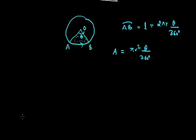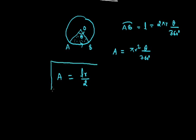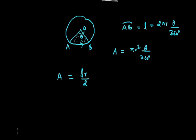Now there is a relationship between A and L. From L = 2πrθ/360 and A = πr²θ/360, we can draw a relationship between A and L. From here, A will be equal to Lr/2. So A = Lr/2 is the relationship between the length of the arc and the area of the sector.